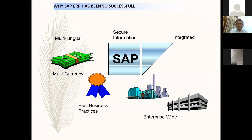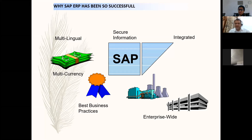Why has ERP been so successful? It is multilingual — when operating in multiple countries you need to take care of language requirements; for example, suppliers in China want invoices in Chinese while in India you want them in English. SAP supports all major languages in the world. The information is secure, the whole environment is integrated enterprise-wide, and it provides best business practices from across the world. It also supports multi-currency, which is essential when operating in multiple countries.